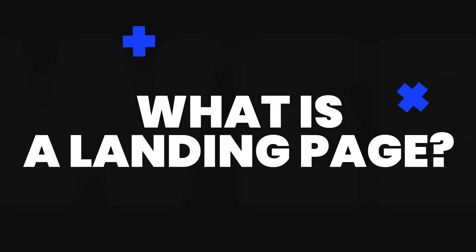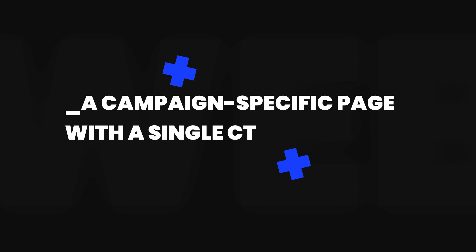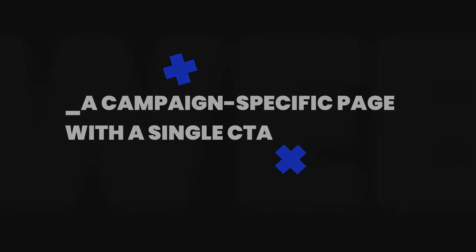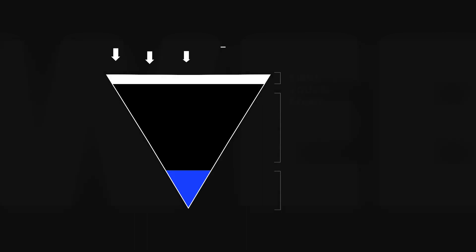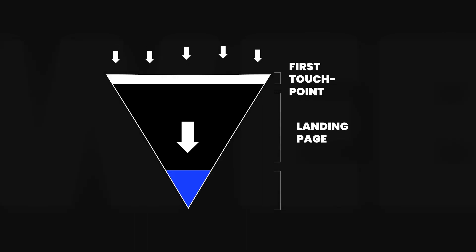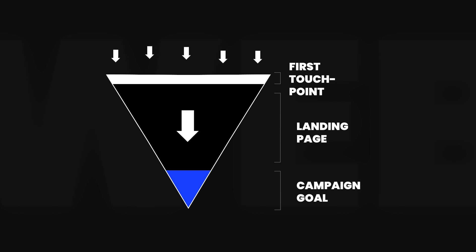Starting with basics — what is a landing page? Marketers use the term landing page to describe a campaign-specific page with a single CTA. The main goal of a landing page is to convert visitors to achieve the goal of the campaign, and this is how it fits into the marketing funnel: you click on a link in an email or a banner ad, and this is where you end up — on a landing page.